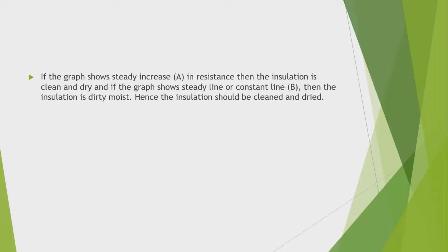If the graph shows a steady increase in resistance, then the insulation is clean and dry. If the graph shows a steady or constant line, then the insulation is dirty and moist.